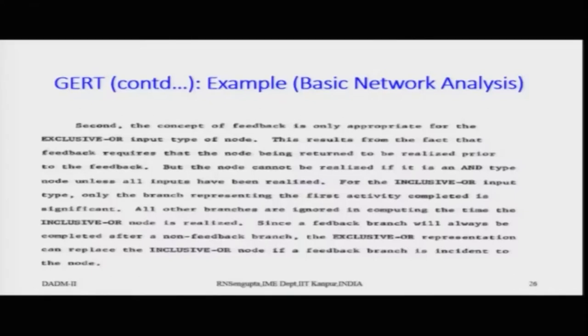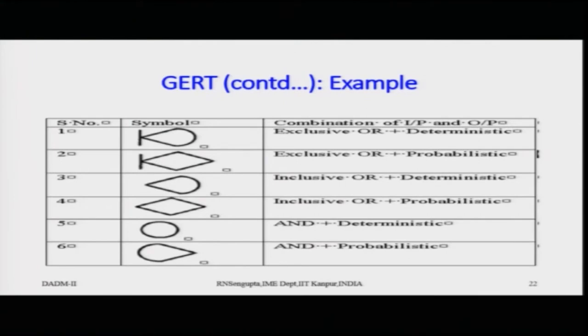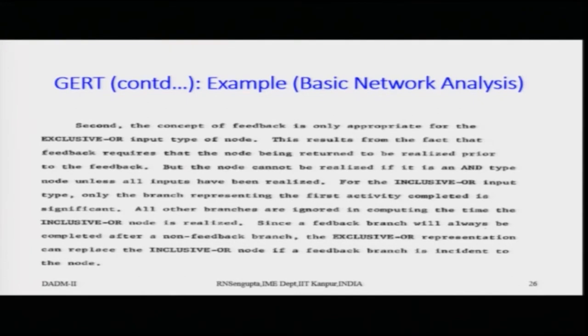Feedback is only appropriate for the exclusive OR input type of node. For exclusive OR, the realization of any branch leading into the node causes the node to be realized — however, one and only one branch leading into the node can be realized at a given point in time.